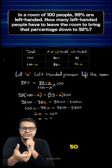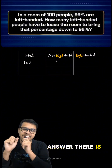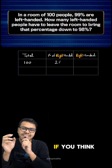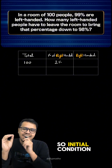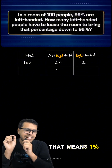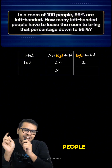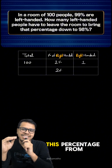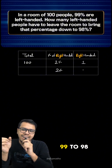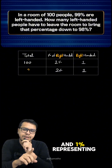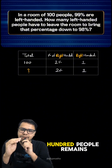Solving that equation gives us x equals 50, which is our answer. There is another way to solve this question — by thinking in terms of right-handed people. Our initial condition was 99 percent left-handed, which means one percent is right-handed, meaning just one person is right-handed. Now we need to bring the percentage from 99 to 98, meaning two percent must be right-handed.